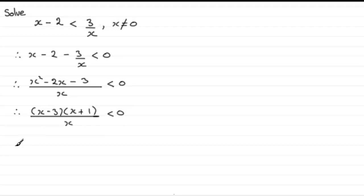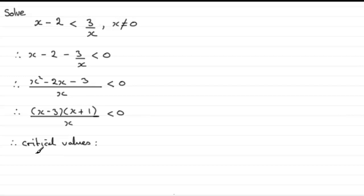For those critical values, we're looking for where the top and the bottom equal zero. If it hadn't factorised I could have used the quadratic formula. But it did factorise, giving x equals 3 or x equals minus 1 — those are the critical values where the top equals zero. For the bottom to equal zero, we simply have x equals zero.